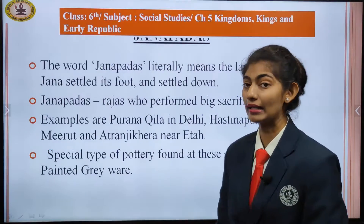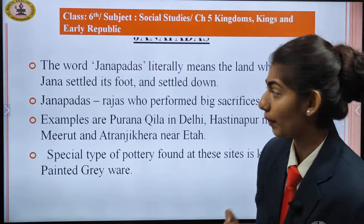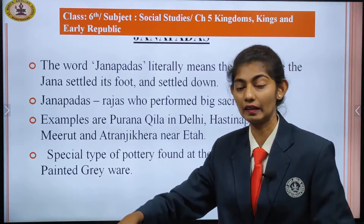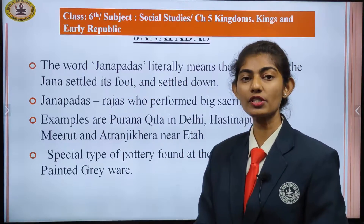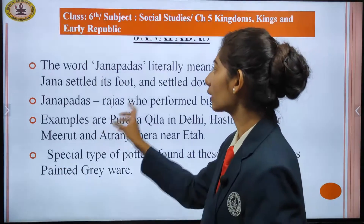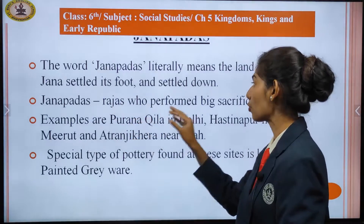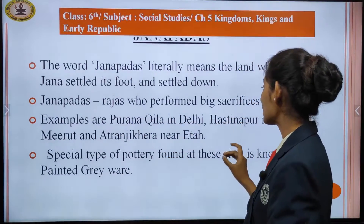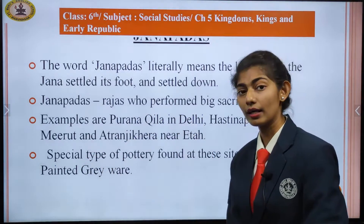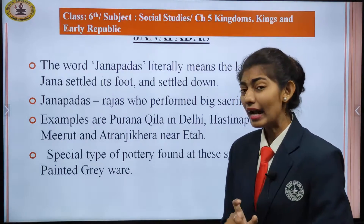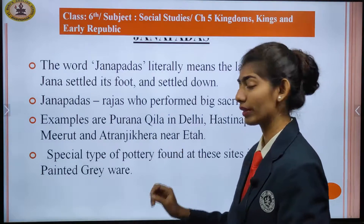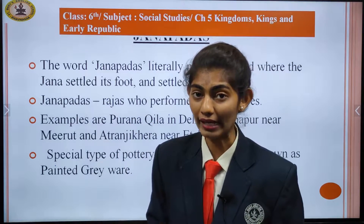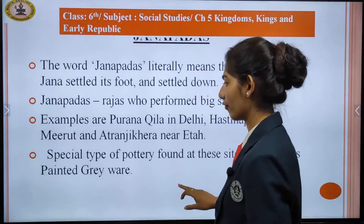The next topic is Janapadas. The word Janapada literally means the land where the jana — the people — settled. Those who stepped on and settled that land formed a Janapada. Rajas who performed big sacrifices ruled these areas. Examples include Purana Qila in Delhi, Hastinapur near Meerut, and Atranjikhera near Etah in Uttar Pradesh. A special type of pottery found at these sites is known as Painted Grey Ware, which we studied in Chapter 4.